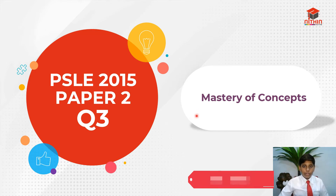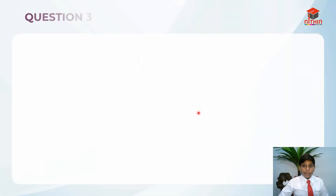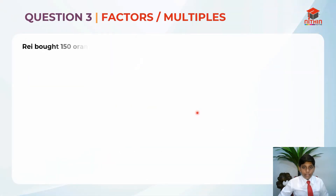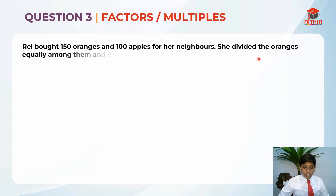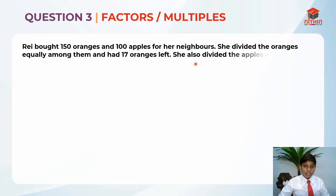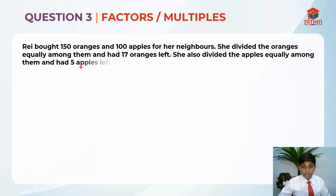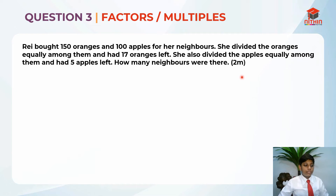Let's jump straight into question 3. Let's read the question first. Ray bought 150 oranges and 100 apples for her neighbours. She divided the oranges equally among them and had 17 oranges left. She also divided the apples equally among them and had 5 apples left. How many neighbours were there? This question is worth 2 marks.